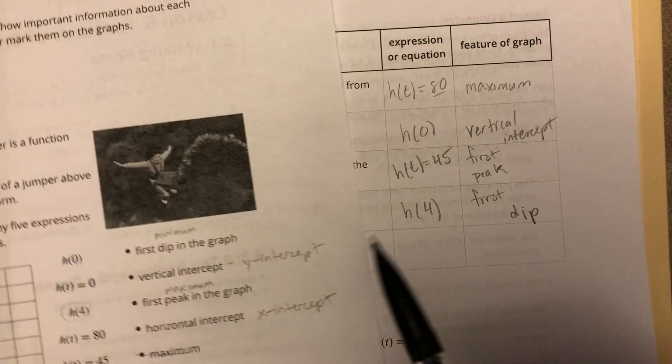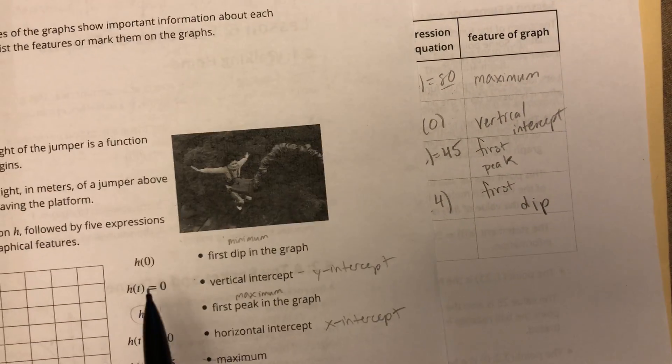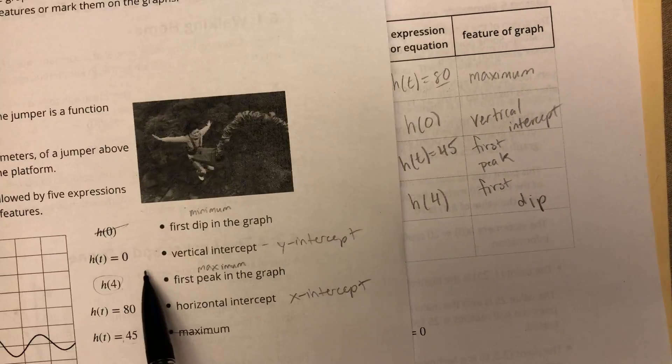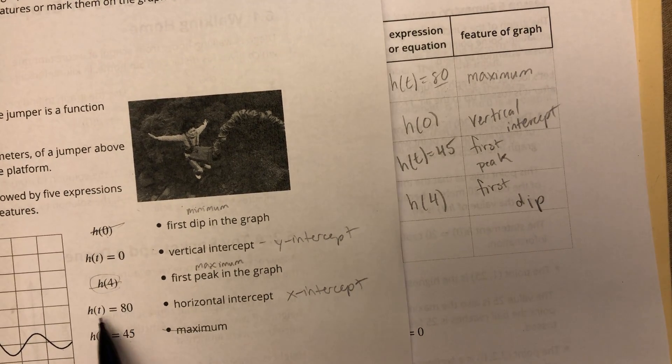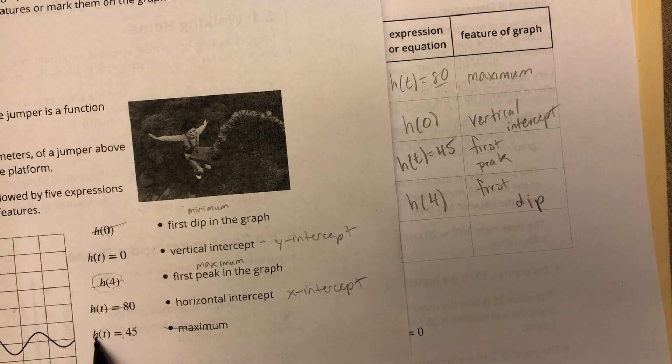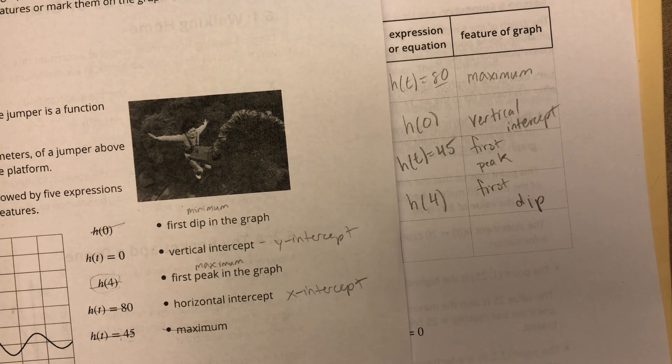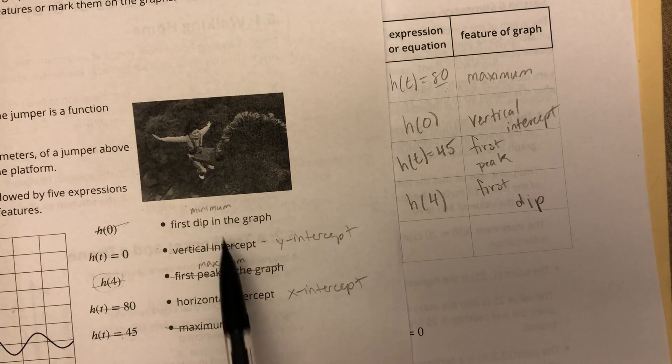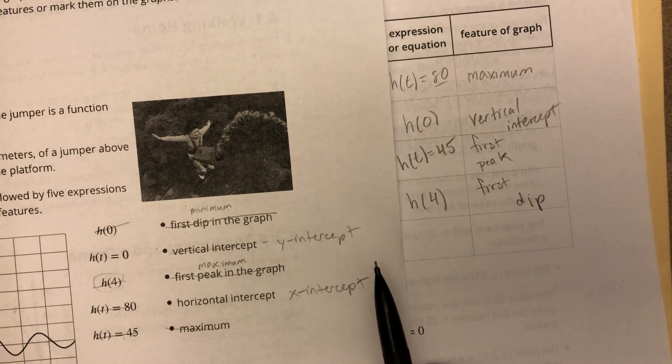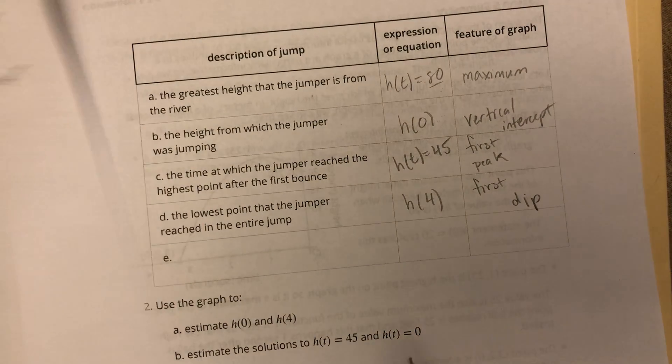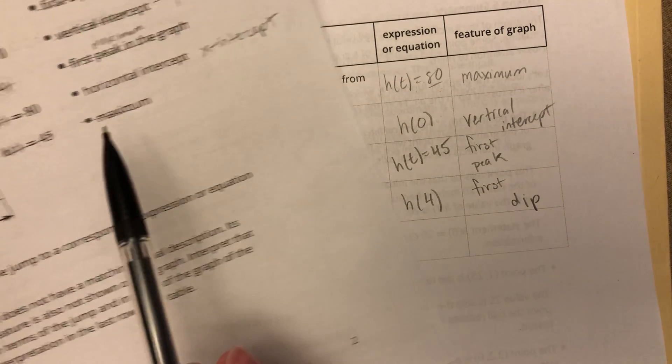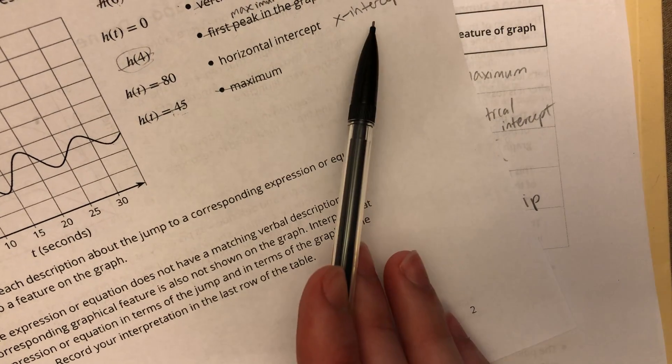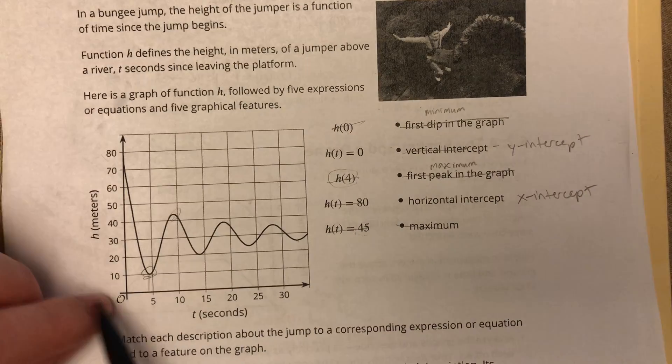Alright. So if I'm looking at all these, I've got H of zero, do I have H of T? I don't have H of T equals zero yet. H of four we got. H of T equals 80. And H of T equals 45. Alright. And we got maximum, first peak, vertical intercept, and minimum. So the only thing we didn't get would be the horizontal intercept or the X intercept or this H of T equals zero. So that makes sense. When Y equals zero, that's right down here. So all along the X axis, Y is equal to zero.